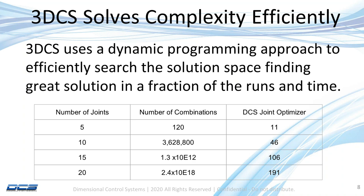If you have 20 joints, you've got two times a million times a million times a million combinations. What we've tried to do is use a unique dynamic programming approach to search the solution space quickly, so that in a small number of runs we can find a great or optimal solution. For five joints, instead of 120 combinations we search 11; for ten joints, instead of 3.6 million we do it in 46; and for 15 joints, about 106 — so we're being both efficient and effective.